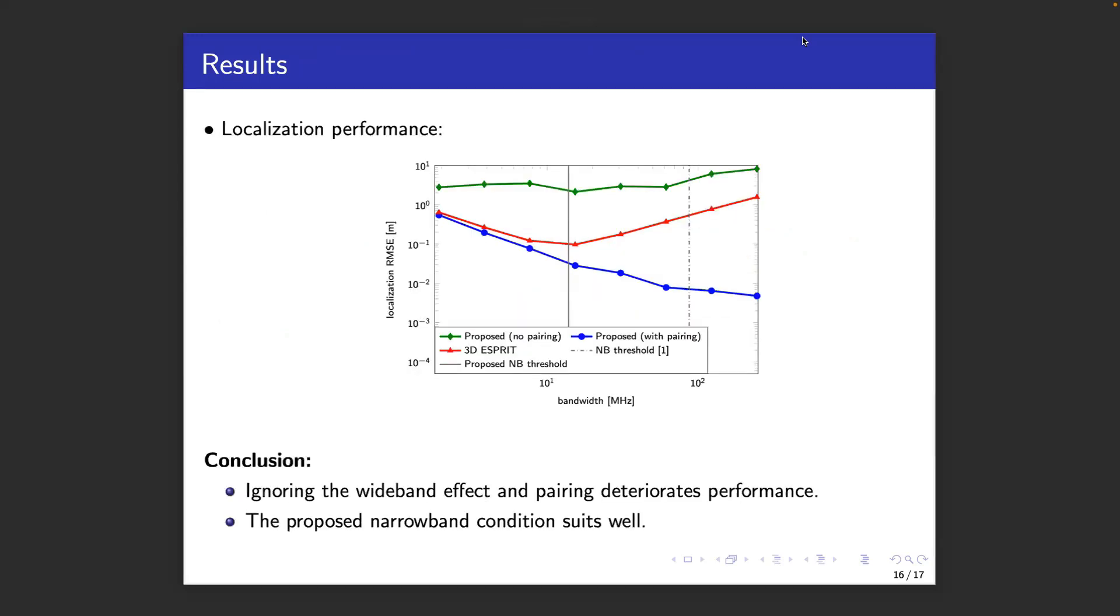The final result is the localization RMSE, which of course combines angle and delay estimation results. Here we see that 3D Esprit starts to degrade after around 15 MHz of bandwidth. While the proposed method keeps improving with more bandwidth, provided the k-means clustering is applied.